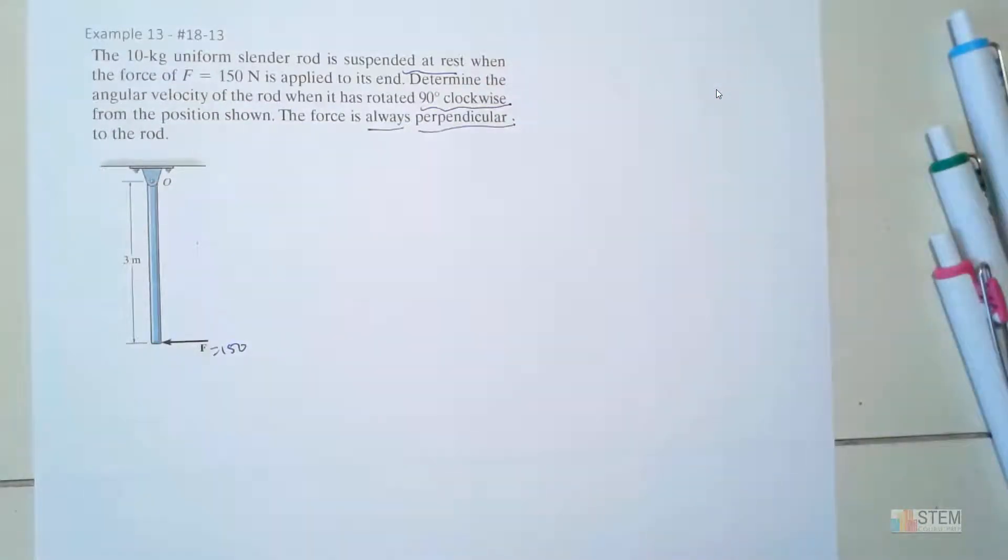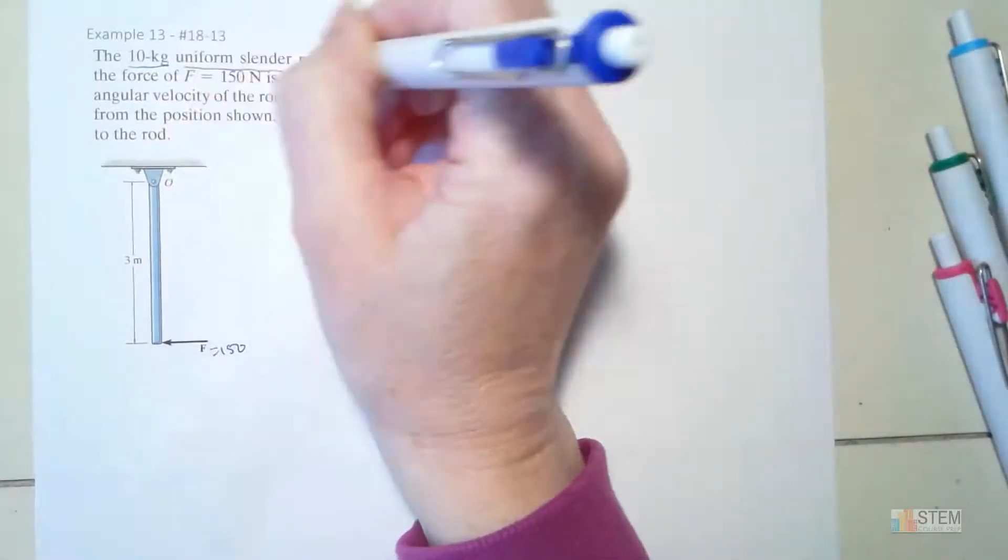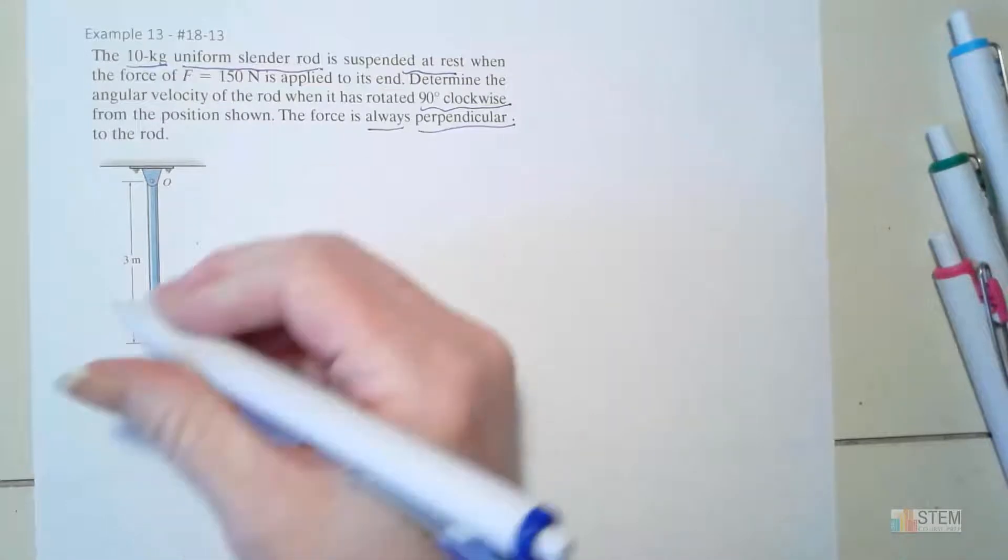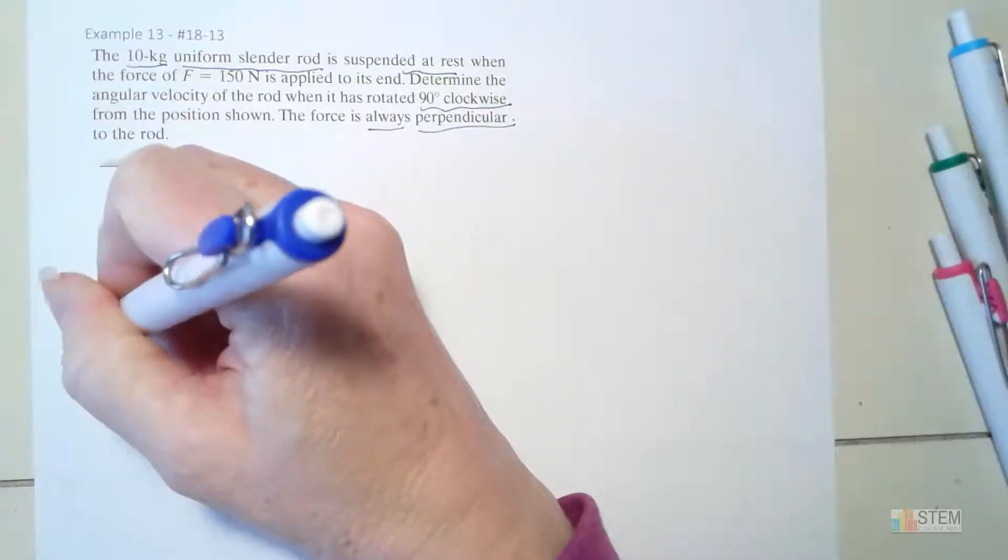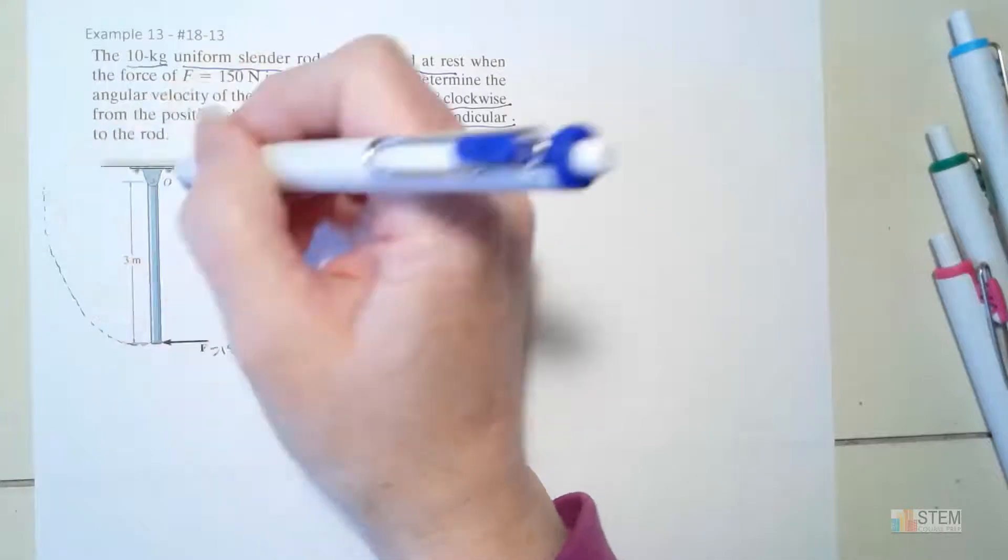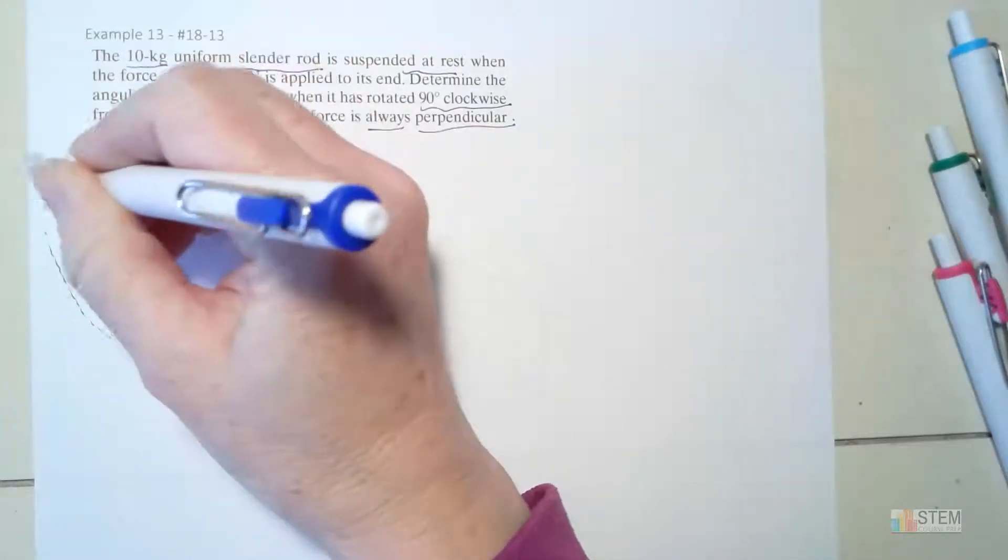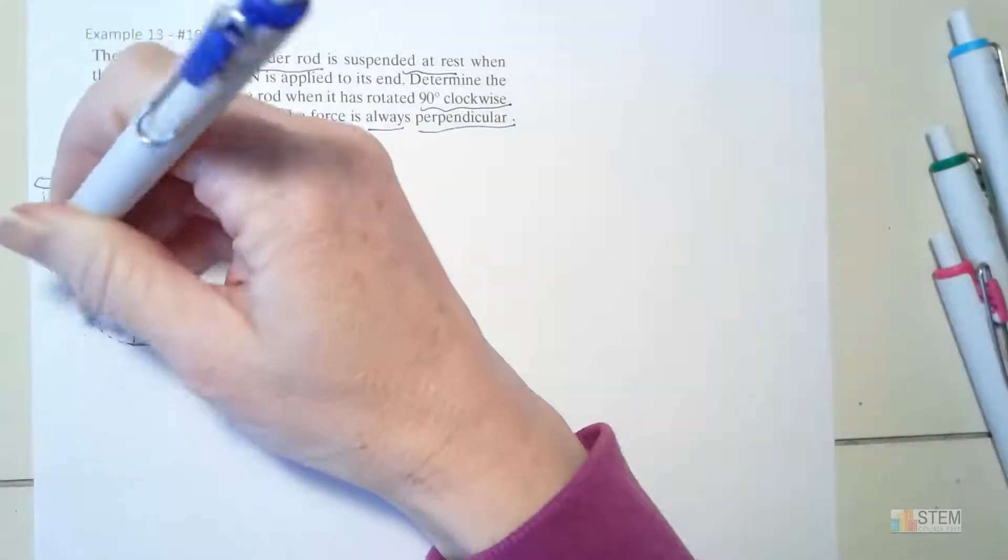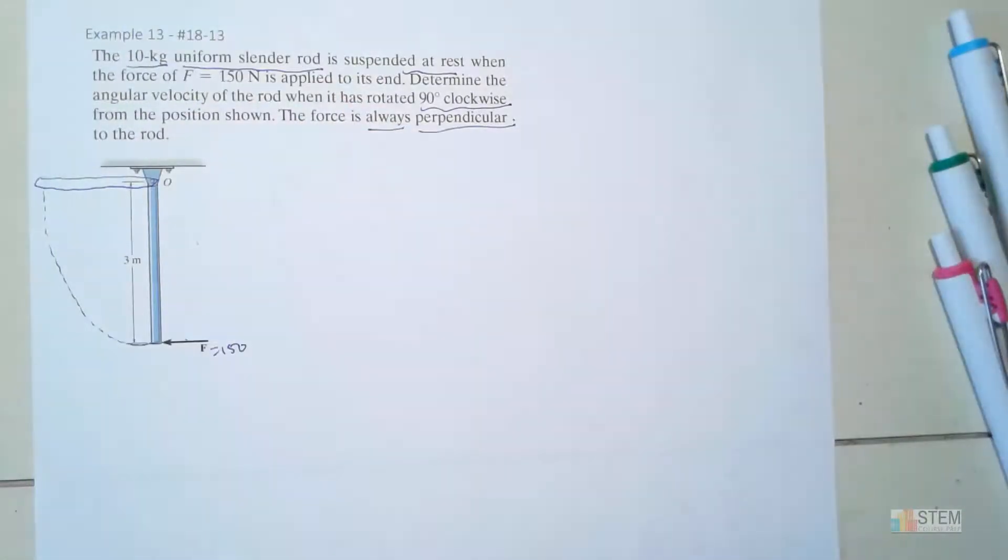It also tells us the force is always perpendicular to the rod. All right, so let's see how we should get started. So first of all we need to recognize that this is a rigid body problem. We're given the mass here, we're told it's a uniform slender rod.